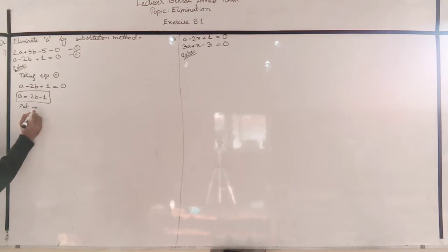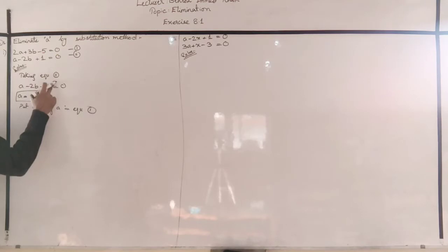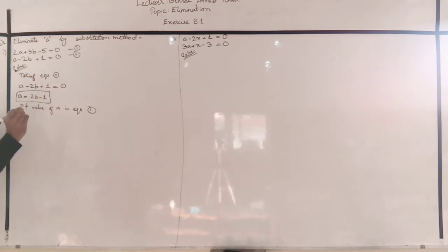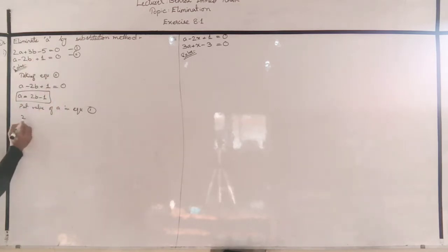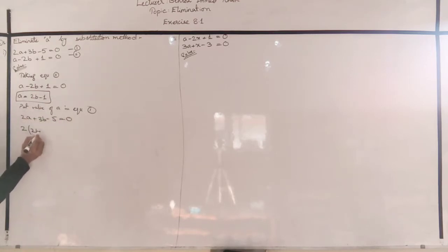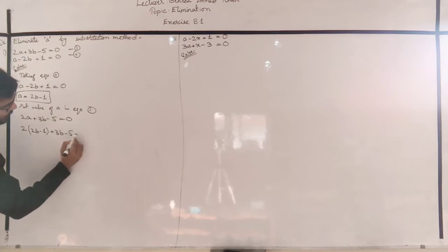Now, put the value of A into equation 1. Important: since we formed the equation from equation 2, we do NOT put the value back into equation 2 — we put it into equation 1. So equation 1 becomes: 2A plus 3B minus 5 equal to 0, and we substitute A = 2B minus 1.